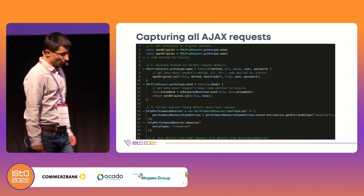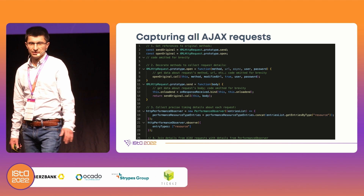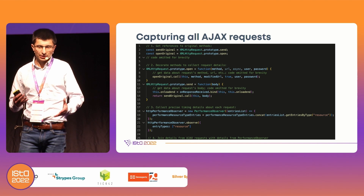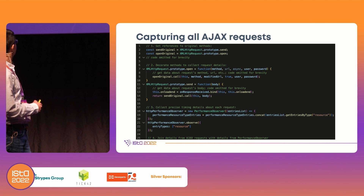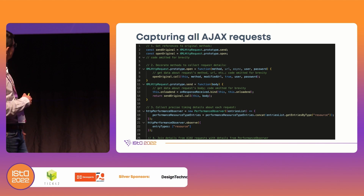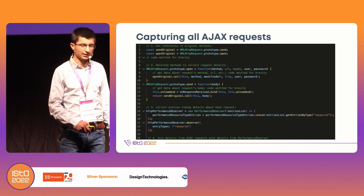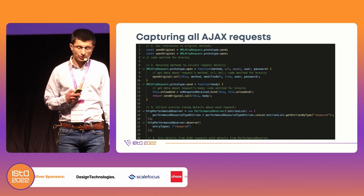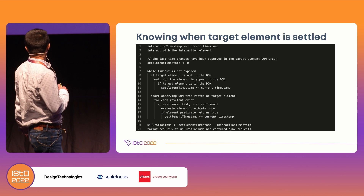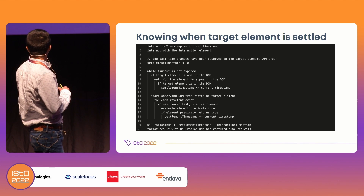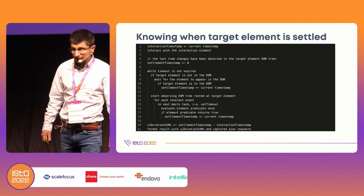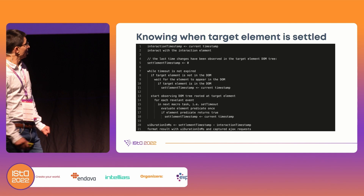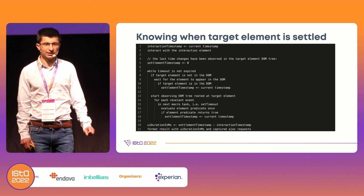At the end, we join the details from both methods — merging the durations of requests with their URLs, methods, and all other details of every request that happened during our performance measurement session. What about tracking our target element? There is another very handy web API: the Mutation Observer.